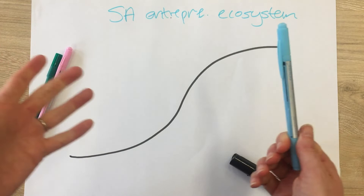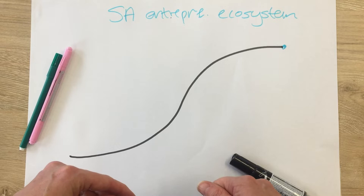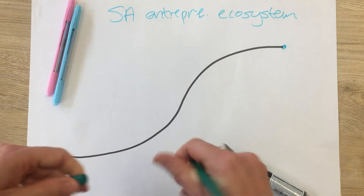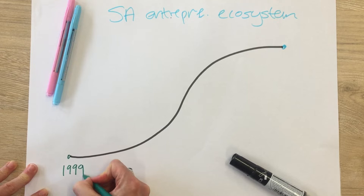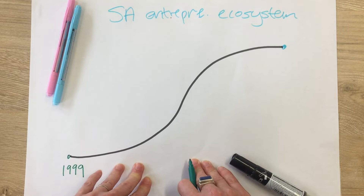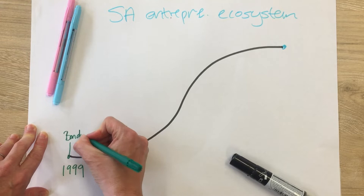You can go back as far as you like — I've done progression curves that go all the way back to ideas from Greek philosophers. But today, for this context, I'm going to start in 1999. That was when South Africa's first tech startup incubator, the Bandwidth Barn, was established in Cape Town, and that was really important for our entrepreneurial ecosystem.